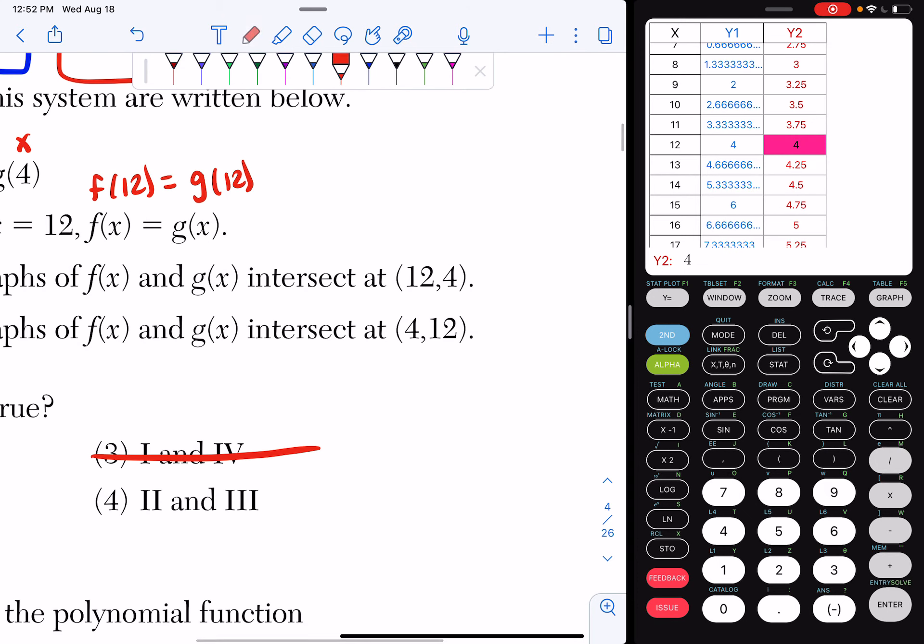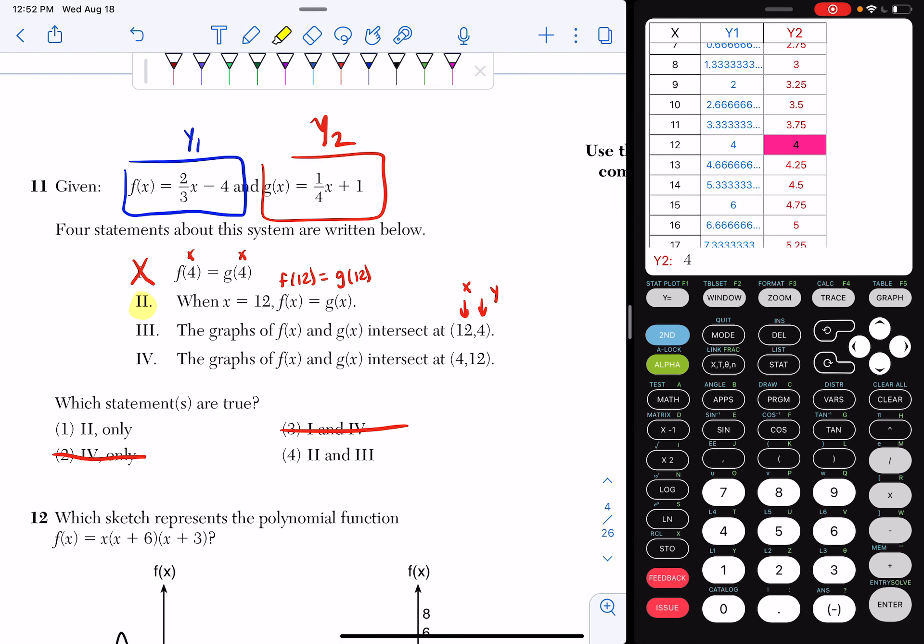Well, if you think about it, this is my x value. This is my y value. Their y values are the exact same at x equals 12, so they do intersect at 12, 4. So this is true.